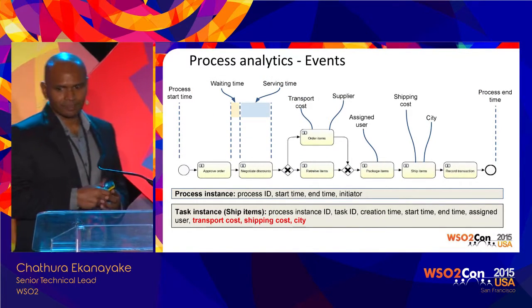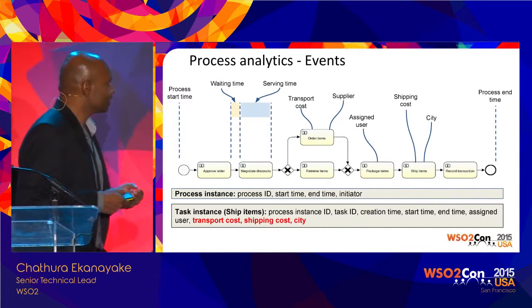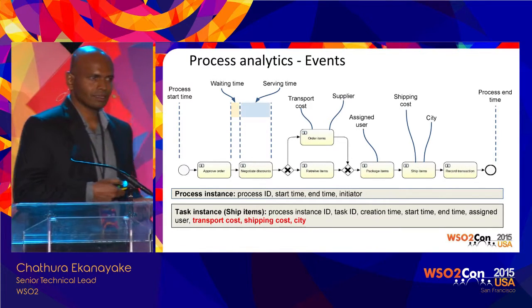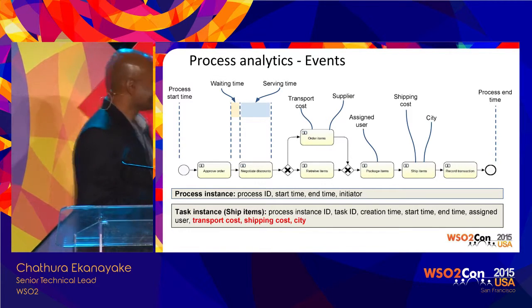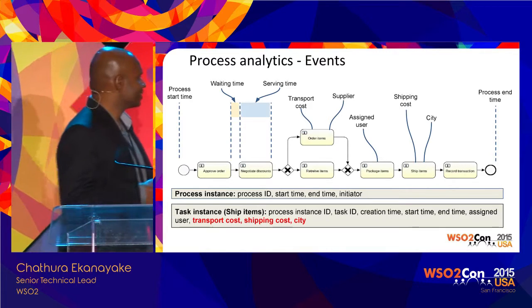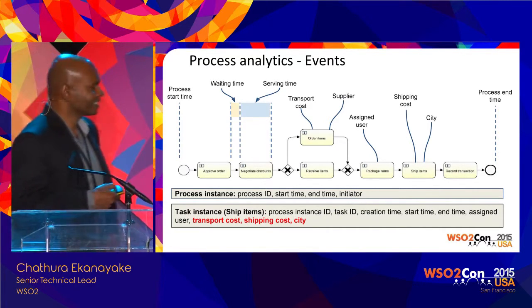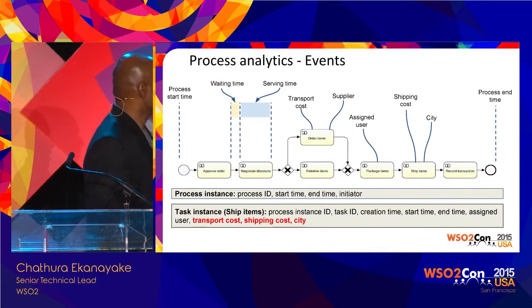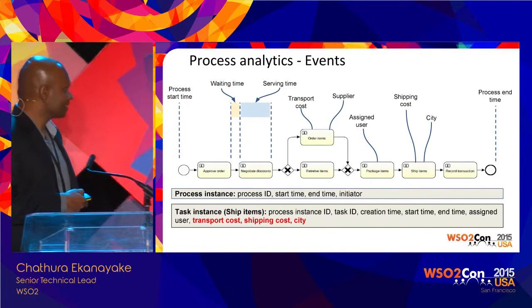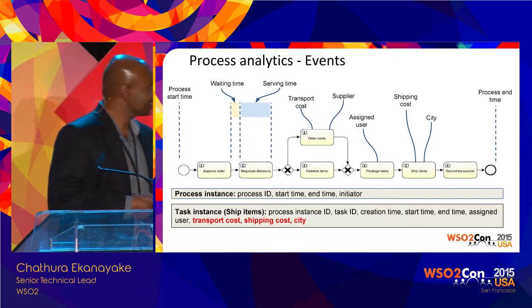Let's understand what process events are. If we take an instance of a process that has already been completed, we can get data like process start time, process end time, the initiator of the process, and how many people are assigned. For each completed task we can get attributes like task start time, task end time, the assignee, and task-specific data attributes like shipping cost or city. By combining these data attributes we can generate events — one for each completed process instance and one for each completed task instance. Once we collect these events, we can do a whole lot of things.